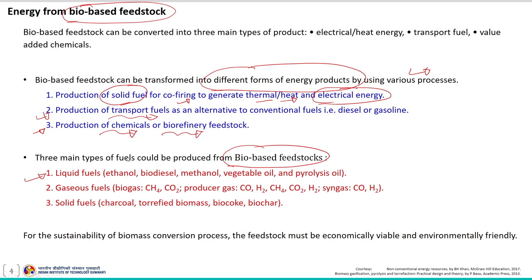Gaseous fuel includes biogas — whose main composition is methane and CO₂ — producer gas, and syngas. Solid fuels include charcoal, torrefied biomass, biocoke, and biochar. So these three main types of products can be produced using bio-based feedstock material.